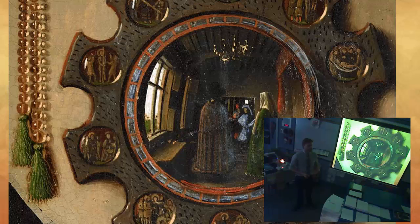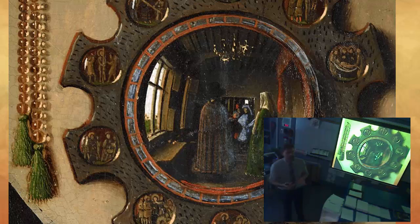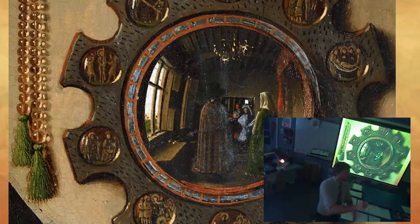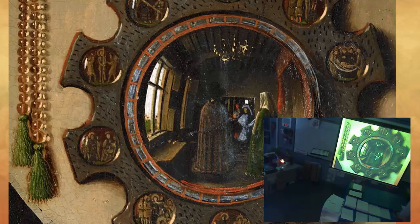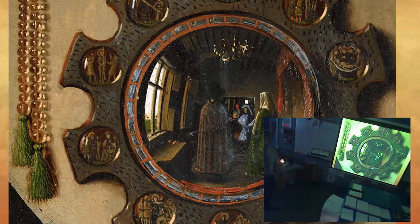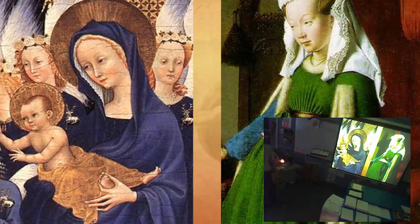Jan van Eyck and others like Botticelli and Parmigianino were 'cheating' — using high-polished convex mirrors as a proto-projector to trace proper proportions. This is something the North invented that the South, including da Vinci, would later use. Eventually this becomes the camera obscura — a large box where a tiny lens projects a silhouette onto the back wall to paint on. It's the use of science to produce artwork, and you can see how that innovation occurs in the Arnolfini Portrait.